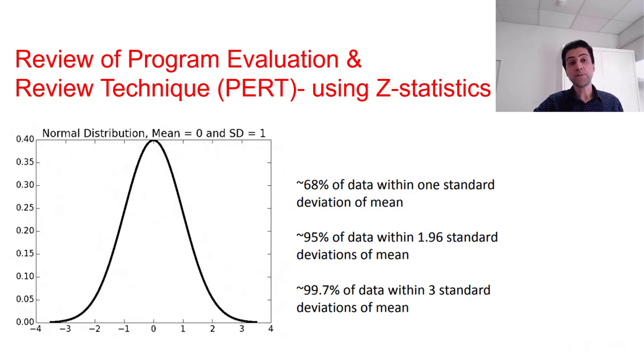Previously in videos we had before, we talked about program evaluation and review technique, or in short PERT. The underlying statistical distribution that we assumed in PERT was beta distribution, which is to some extent similar to gaussian or normal distribution, and Z statistics were developed and tables were used to quantify probabilities for different events. P50 is associated with the median of the distribution, and 50 percent of the area under the curve is associated with the P50 or median.